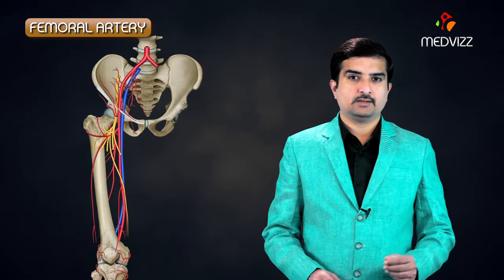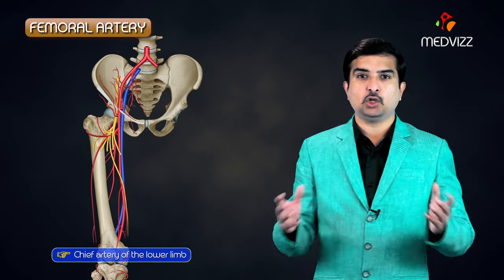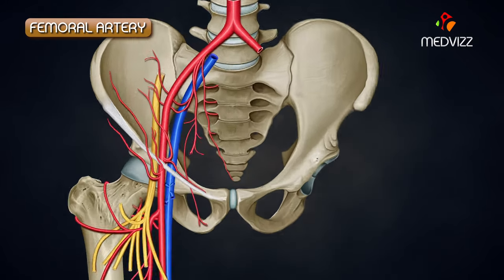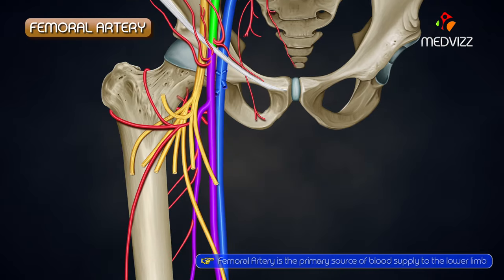Femoral artery. The femoral artery is the chief artery of the lower limb. It is a continuation of the external iliac artery as it passes below the inguinal ligament, and it is the primary source of blood supply to the lower limb.